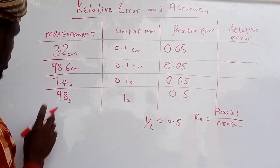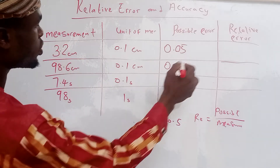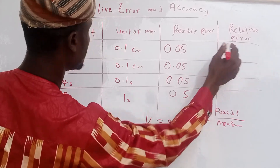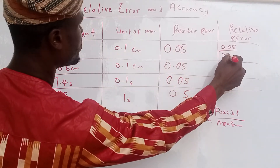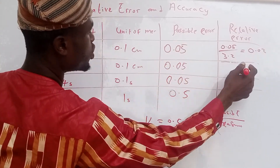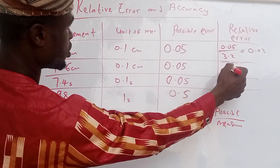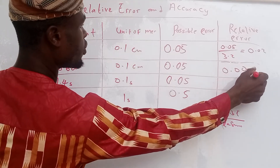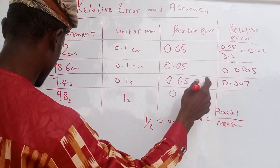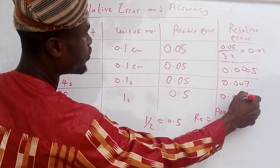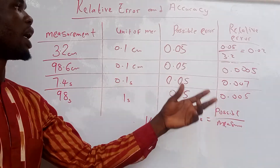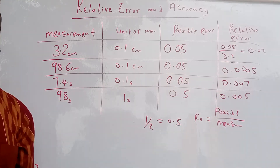For the first example, the relative error is calculated. For the third one, the result is 0.00005, while the first one is 0.005. That is how to find our relative error and possible error. Thank you for subscribing.